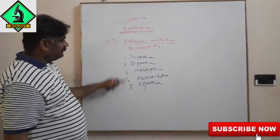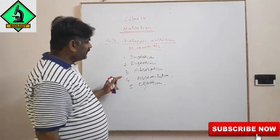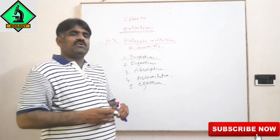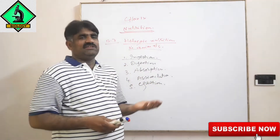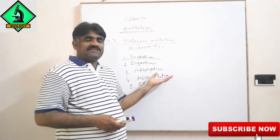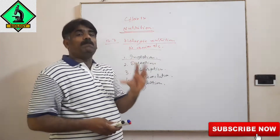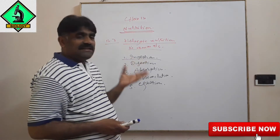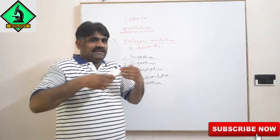These are the five basic steps in the holozoic mode of nutrition in animals. In the first step, ingestion — all animals, from protozoa onwards, need food from external sources, that is from the environment, either eating plants or eating other animals. So ingestion is the taking of complex organic food material inside the body, engulfing it.